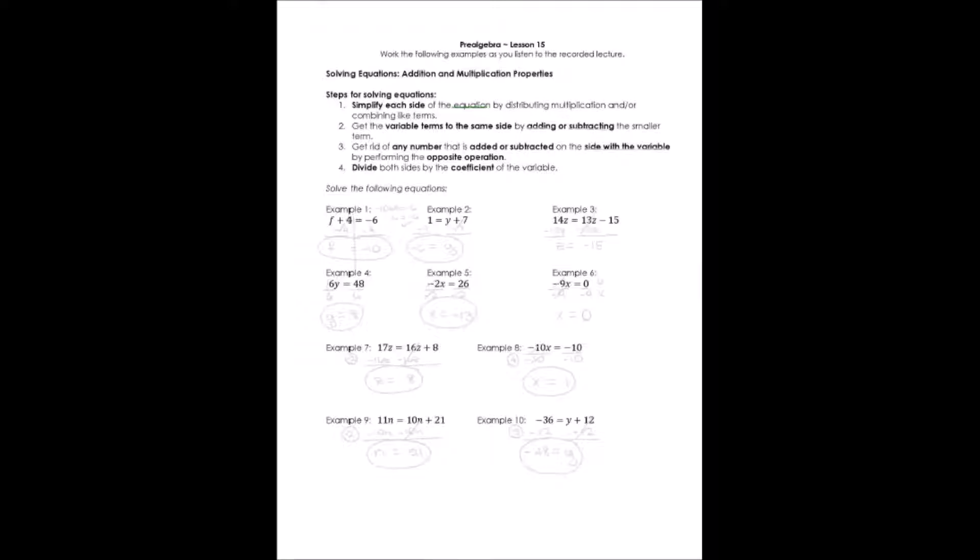Step number two, we get the variable terms on the same side. That means to do that, we'll have to either add or subtract the smaller term. And we'll go through some examples so you'll understand how to do that.